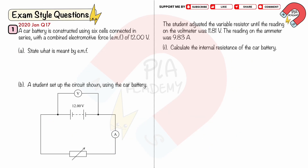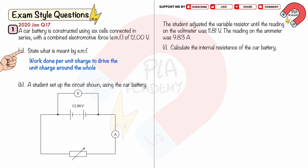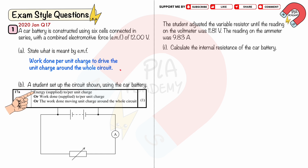Exam-style question. A car battery is constructed using six cells connected in series with a combined electromotive force (EMF) of 12 volts. Part A: State what is meant by EMF. The EMF is the work done per unit charge by the power supply to drive charge around the whole circuit. You will get one mark for: energy supplied per unit charge, or work done per unit charge, or work done moving unit charge around the whole circuit.